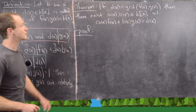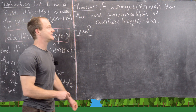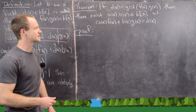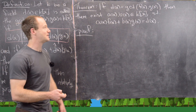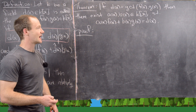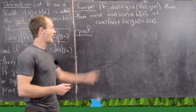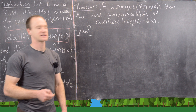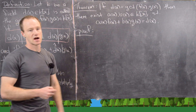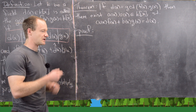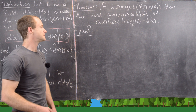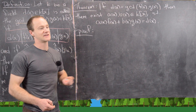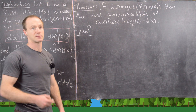The property we want to prove is: if D equals the GCD of F(X) and G(X), then there exist polynomials A(X) and B(X) in K[X] such that A(X)·F(X) + B(X)·G(X) = D(X). In other words, the greatest common divisor of two polynomials can be written as a linear combination of those two polynomials. The proof follows the same trajectory as the proof for integers.